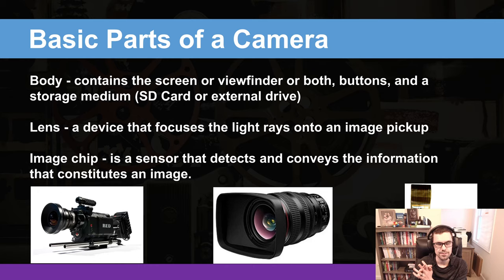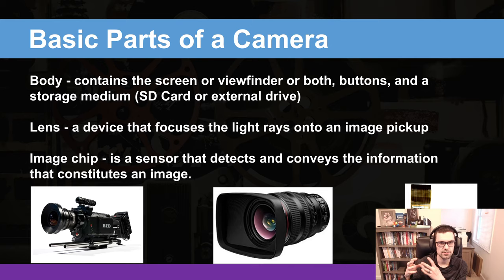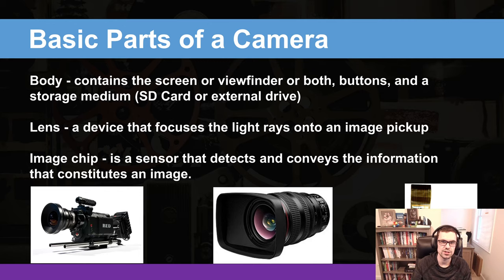The imaging chip has these little tube-like things all over it — tons of them, millions of them. When the light fills up some of those tubes in certain ways, it records that and produces an image as a result. The imaging chip is an incredibly important part of the camera because it's how we get the actual image that's produced.